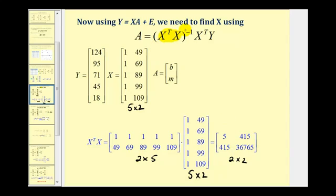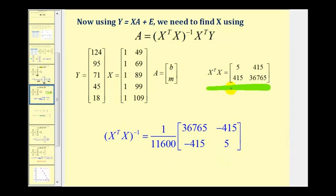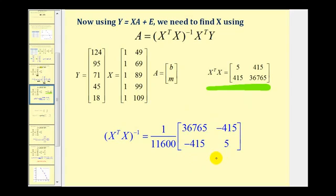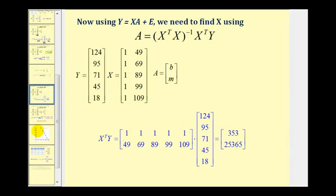For the next step, we find the inverse of this two by two product. Because this product is a two by two matrix, we can use the shortcut formula to find the inverse. Next, we find the product of the transpose of matrix x and matrix y. The transpose of matrix x is a two by five matrix and matrix y is a five by one matrix, so the product is a two by one matrix.